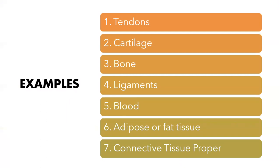What are some examples of connective tissues? We have tendons, we have ligaments, we have bones, we have blood, we have adipose tissue or fat tissue, we have connective tissue proper, and then we can also add cartilage to the list of connective tissues that we have.